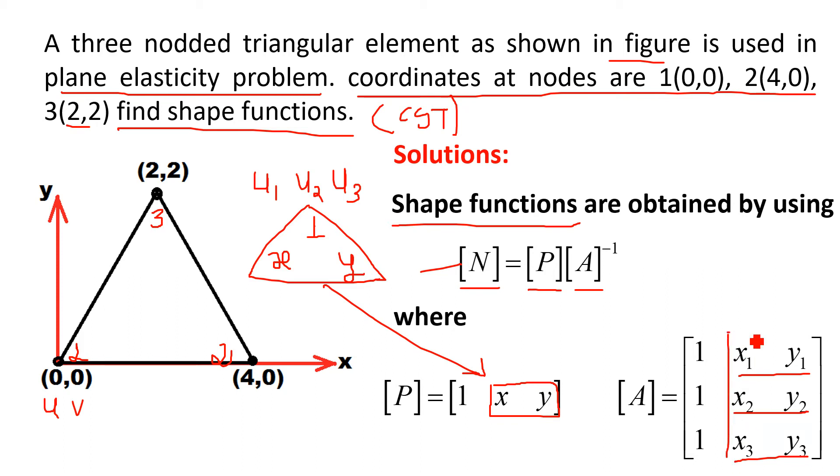In this problem, values of X1, Y1 to X3, Y3 are known to us. X1, Y1 is (0,0), X2, Y2 is (4,0), and X3, Y3 is (2,2). These coordinates are known.